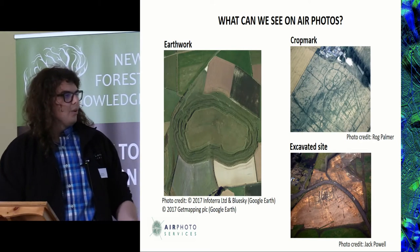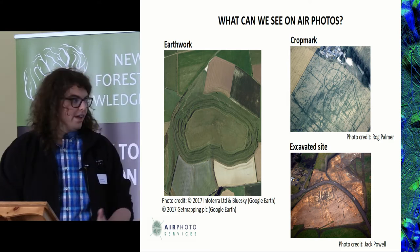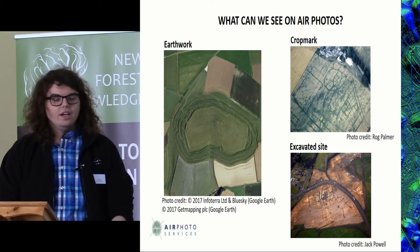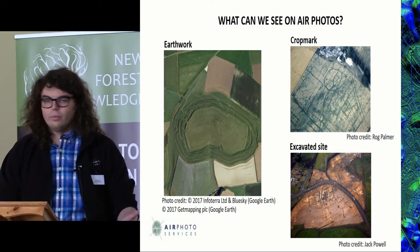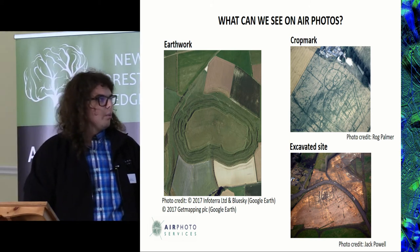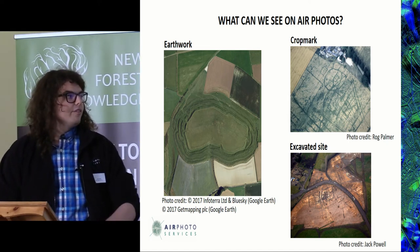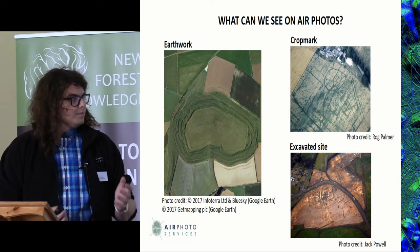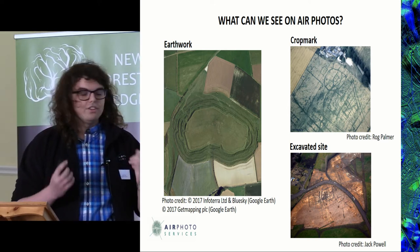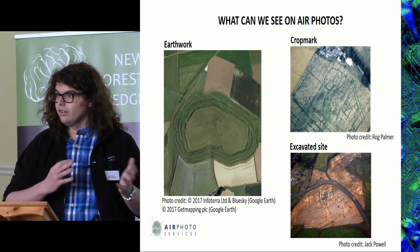What can we actually see on air photos? We rarely get sites as easy to see as Maiden Castle, but a lot of the time we can see earthworks — the still upstanding remains of archaeological sites. The most synonymous form of how we see archaeology is crop marks. Crop marks and soil marks are formed with crops and vegetation growing in the ditch fill of archaeological features. Positive crop marks grow bigger and more lush than the surrounding crop as the ditch features below have more nutrients.